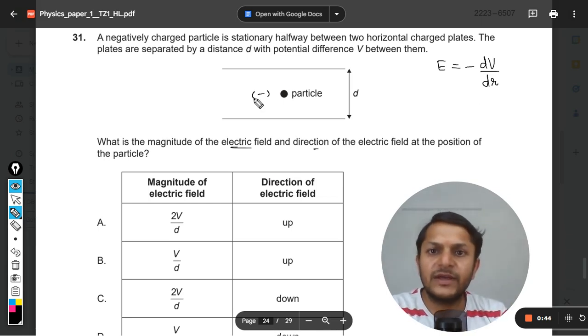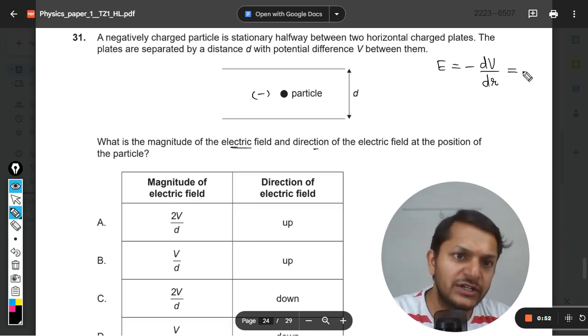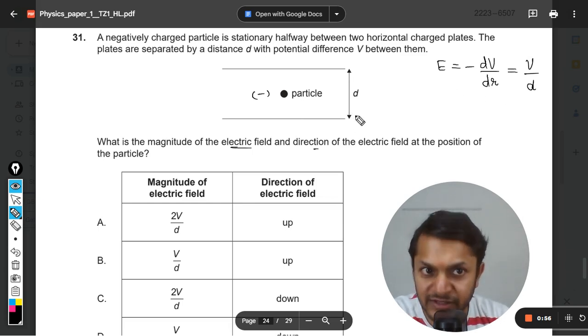But in these kinds of questions, when you are using plates and there is a complete uniform electric field, this formula reduces itself to the potential difference divided by d, which is the distance between the plates.